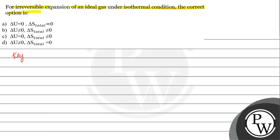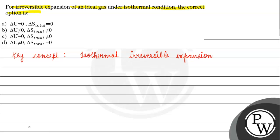The key concept for this question is isothermal irreversible expansion. Isothermal means the temperature is constant — 'thermal' is basically related to temperature, and 'iso' means same, so temperature is constant.